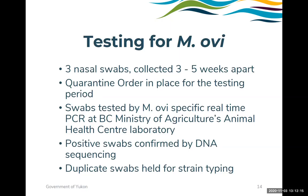The swabs we collect are tested by MOV-specific real-time PCR at the BC Ministry of Agriculture's Animal Health Centre Laboratory, and positive swabs are confirmed by DNA sequencing. We are holding duplicate swabs for strain typing, which we do plan to pursue — it's in the works. However, setting up an out-of-country contract has not been easy and those efforts are still ongoing.